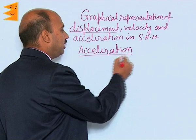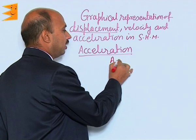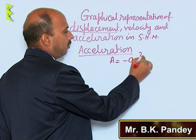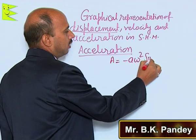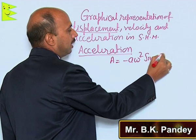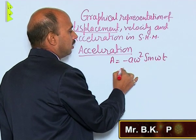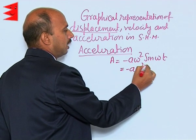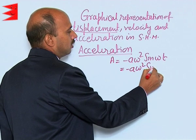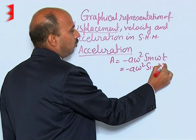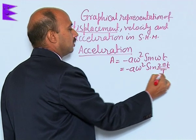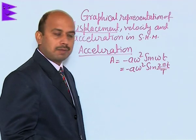For acceleration, we can write a is equal to minus a omega square sin(omega t), which is equal to minus a omega square sin(2 pi t upon capital T), where T is the time period.